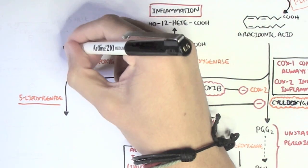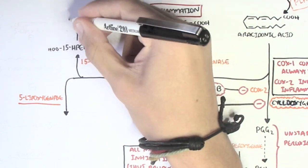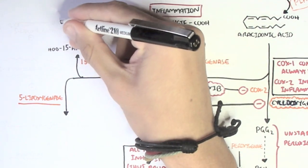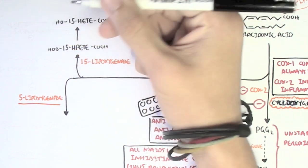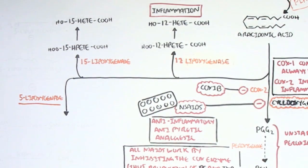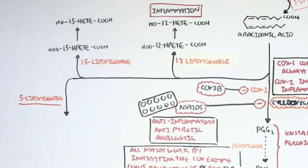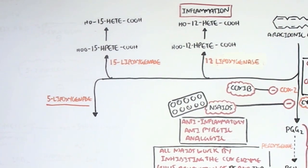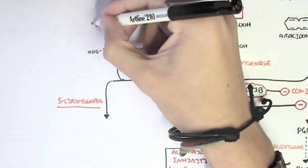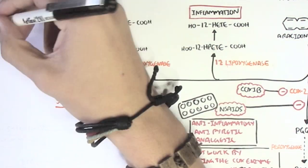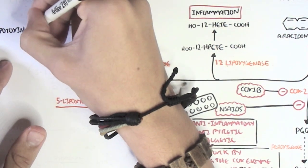Arachidonic acid can also convert to 15-HPETE by the enzyme 15-lipoxygenase. 15-HPETE will then quickly convert to 15-HETE. The difference again being that the first had a hydroperoxy group and the second had a hydroxyl group.